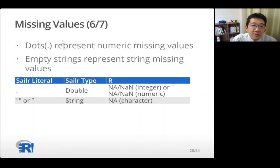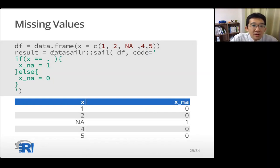You can also use missing values. NaN represents numeric missing values. And empty strings represent string missing values. NaN means missing value in Sailr. When you compare with NA in R, it should return true. And when you compare empty string with NA in character vector of R, it should return true. So this is an example. I'm creating a new data frame containing missing value. And if x equals to NaN numeric missing value, x_na is assigned 1. And else x_na is assigned 0. So in this example, when x has NA, the x_na has 1. And in other cases, this column has 0. So it's working.